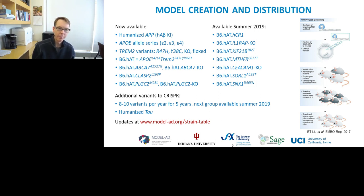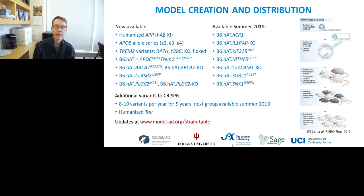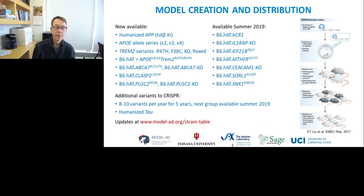There's a humanized APP — there are a few small differences in the amyloid beta precursor sequence between human and mouse, so we've humanized that with a humanized A-beta knock-in mouse. We've also introduced the ApoE allele series: E2, E3, and E4 alleles are now in these mice, so we can study the most commonly associated genetic factor in Alzheimer's disease, the ApoE gene. We've also introduced a number of TREM2 variants — relatively rare but with fairly high odds ratios, in particular the R47H point mutation in TREM2.